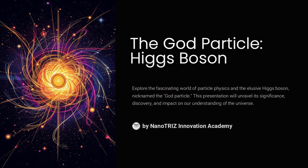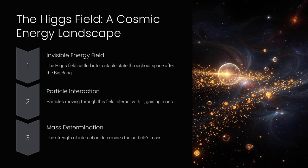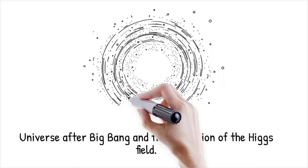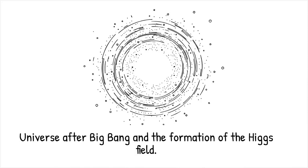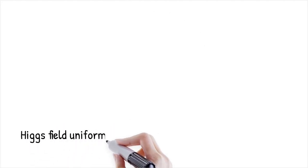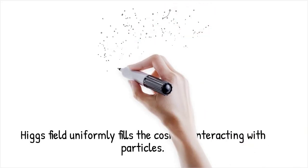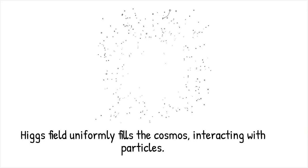Picture the entire universe right after the Big Bang. Back then, it was extremely hot and dense, and as it expanded and cooled, an invisible energy field called the Higgs field settled into a stable state throughout space. Unlike ordinary fields like a magnetic field around a magnet, the Higgs field is uniform and fills every nook and cranny of the cosmos. Any particle moving through this field interacts with it, and the nature of this interaction gives that particle its mass.